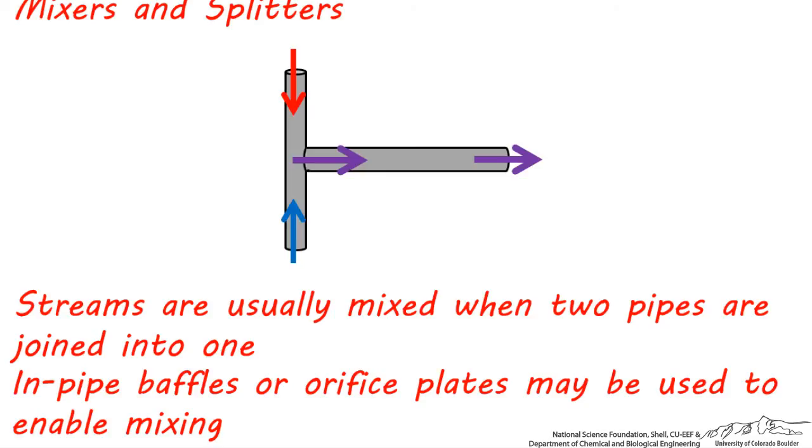There also might be in-pipe baffles after the T, which help the liquids, gases, or vapors combine more effectively. Or there might be an orifice plate that helps inject one stream into another, but these are not always necessary.